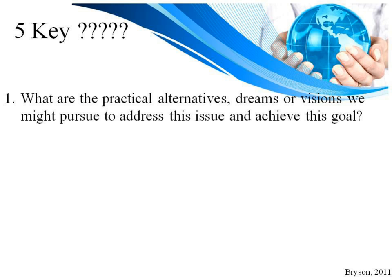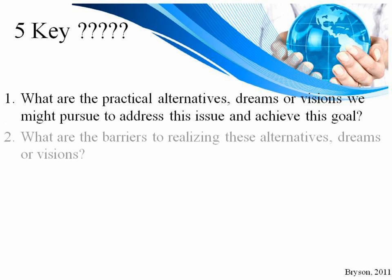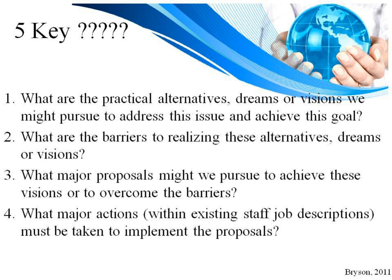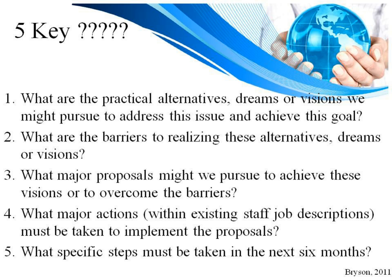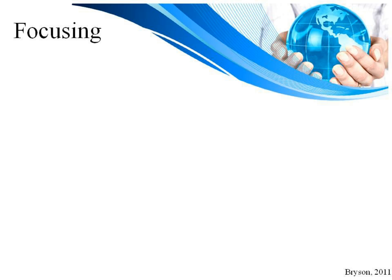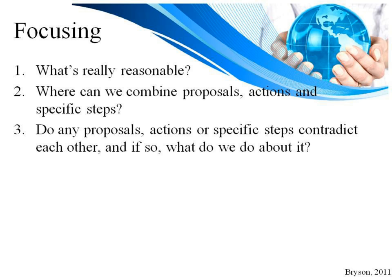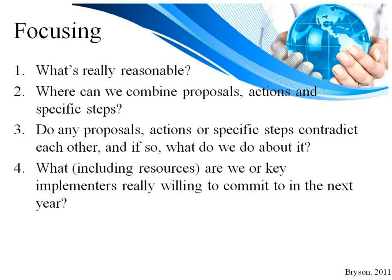Five key questions in strategy formulation: What are the practical alternatives, dreams, or visions we might pursue to address this issue? What are the barriers to realizing these alternatives? What major proposals might we pursue to overcome the barriers? What major actions within existing staff job descriptions must be taken to implement the proposals? And what specific steps must be taken in the next six months? We continue to funnel down — where can we combine proposals, actions, and steps? Do any proposals contradict each other? What are we really willing to commit to in the next year? Because if there is no commitment and follow-through, there's no sense in doing it.